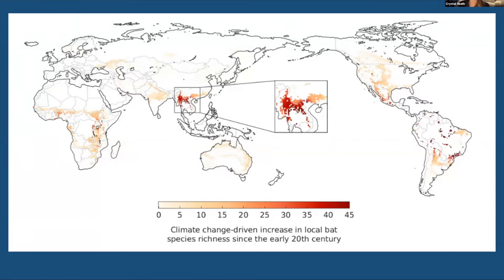This is given that each bat species carries on average 2.67 coronaviruses. Bats are remarkable in that they can carry many viruses without becoming sick. They have interesting adaptations due to their high metabolic demands for flight — they're accustomed to pieces of DNA breaking off and entering the cytoplasm, which would normally trigger harmful inflammatory responses.